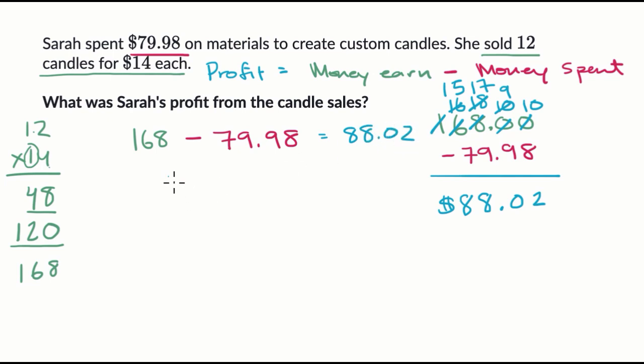And I like to just double check that. If I were to subtract 80 dollars from this, I would get straight to 88 dollars. But I'm subtracting two cents less than that, so it makes sense that I got to 88 dollars and two cents. Let's do another example. These are fun.